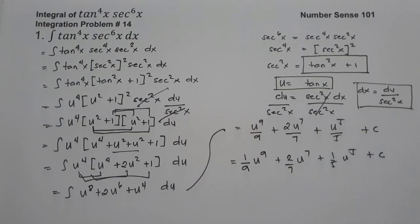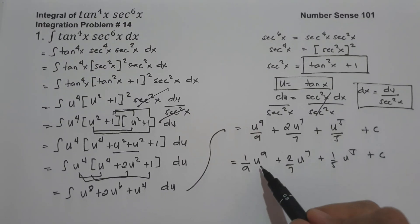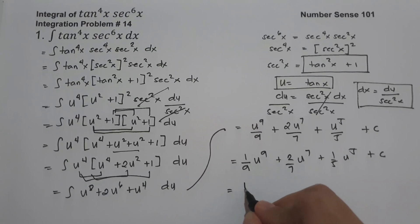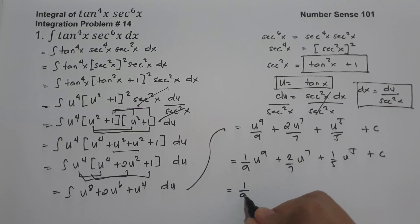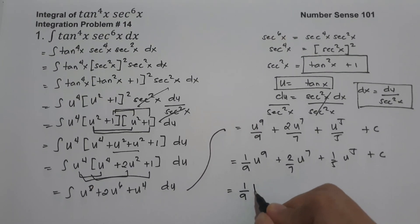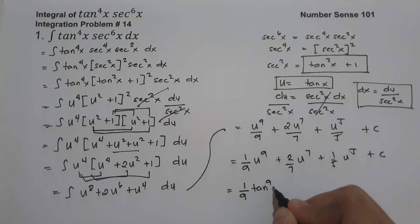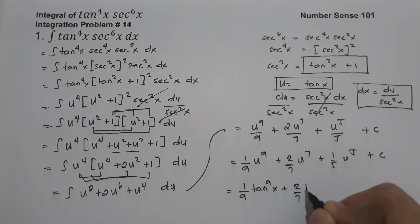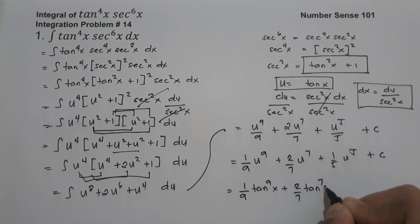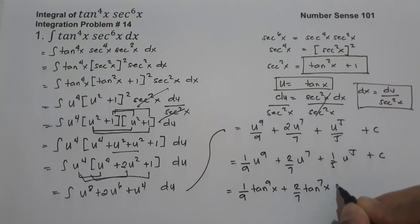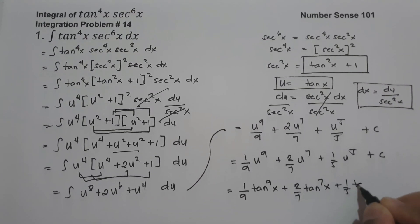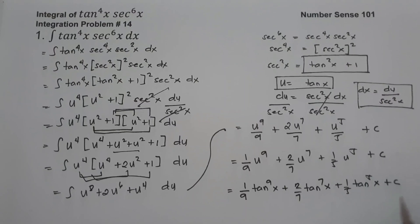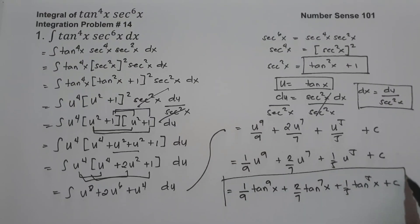Finally, we substitute back u = tan(x). Our final answer is (1/9)tan⁹(x) + (2/7)tan⁷(x) + (1/5)tan⁵(x) + C.